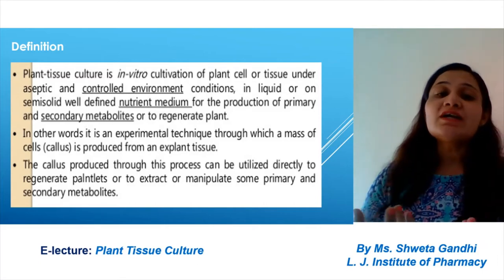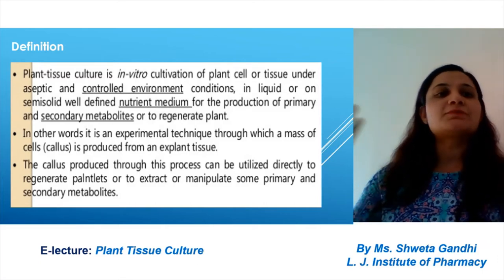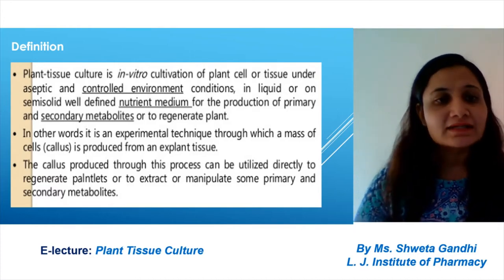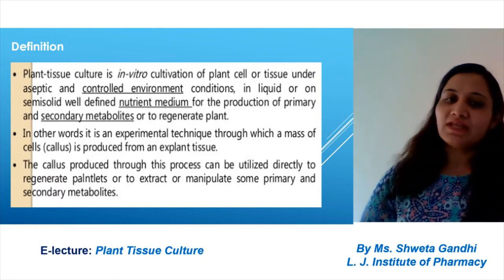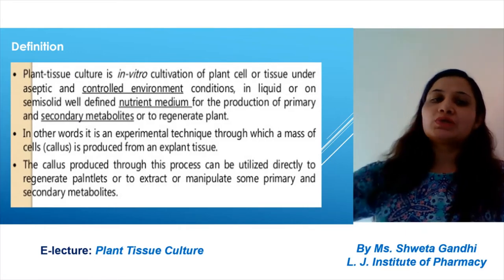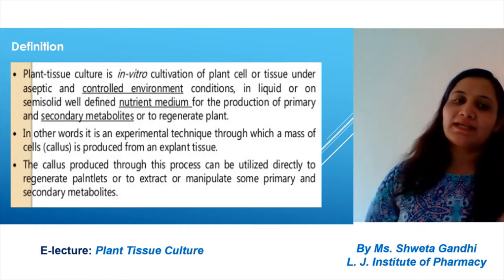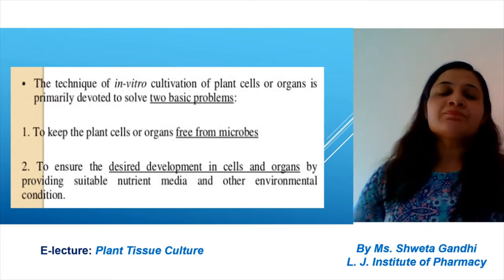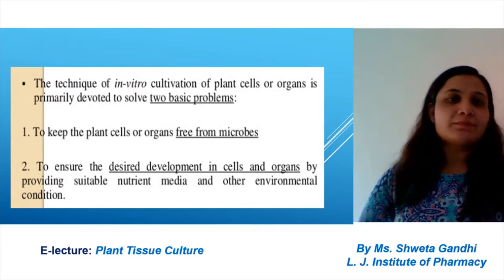Plant tissue culture is the in vitro cultivation of plants in an aseptic, sterile, or controlled environment where we provide a nutrient medium. We are doing this for the production of secondary metabolites, primary metabolites, and to regenerate the plant. The callus is the mass of cells and can be directly used to regenerate plant leaves, and primary and secondary metabolites are produced.